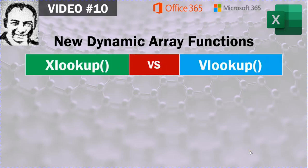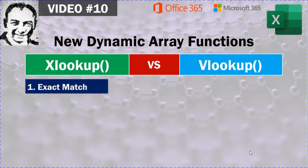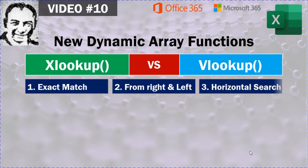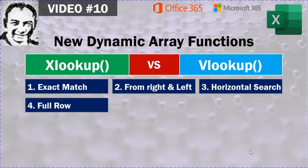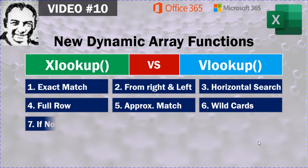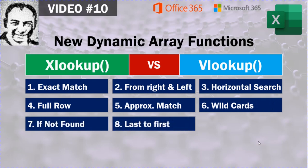In this video we will compare XLOOKUP and VLOOKUP functions and ask you to decide which one to choose in which situation. We are going to look at eight different comparison points: exact match, right to left, horizontal search, full row, approximate match, wildcards, if not found, and finally last to first or reverse search.